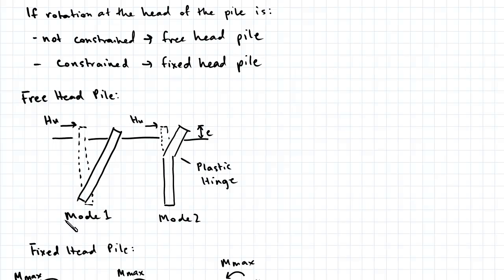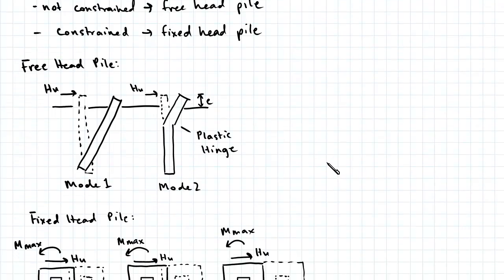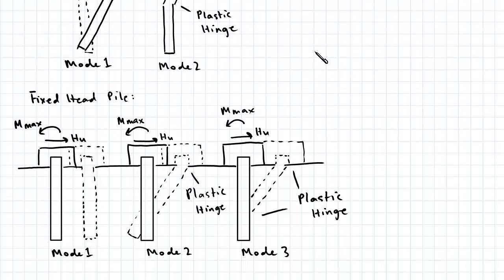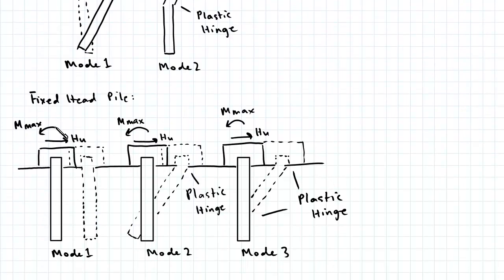In this diagram you can see the possible failure modes for free head pile. In mode 1, the soil fails resulting in a large deflection and rotation in the pile. In mode 2, the pile fails before the soil does and we have a plastic hinge forming.